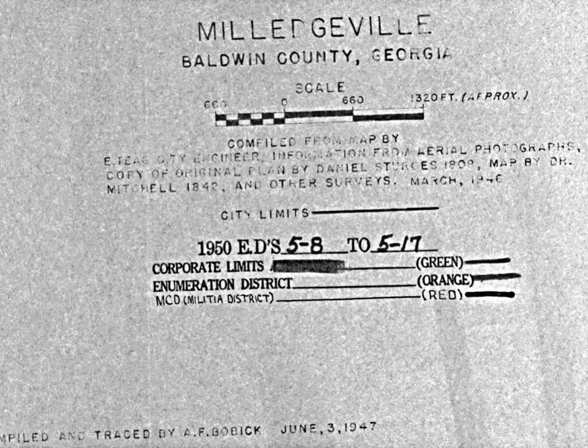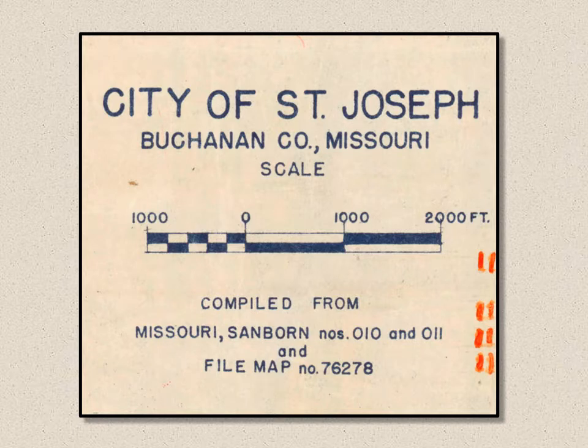Here's one from Milledgeville, Georgia. The text says it's compiled from a map by the city engineer, information from aerial photographs, a copy of an original plan from 1808, a map by Dr. Mitchell from 1842, and other surveys from March 1946. It was compiled and traced in 1947. And this is the city of St. Joseph, Buchanan County, Missouri — I'm going to use this as an important example later. You can see it's a compiled map, compiled from sources with no clear date.